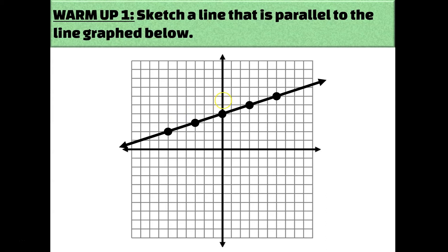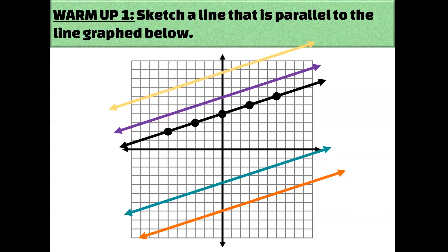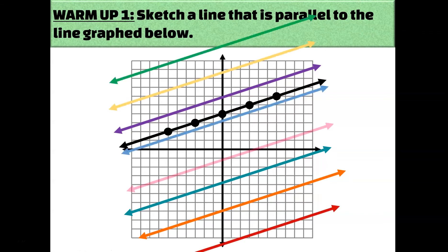Well, you would need to know its slope. Remember that parallel lines have equal slopes, and this line has a slope of up one, right three — or down one and left three. So any line that you could draw that also goes up one and right three would be considered parallel to the original line because they all have the same slope.